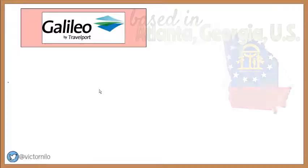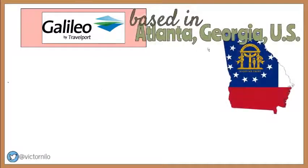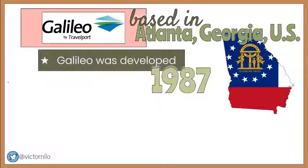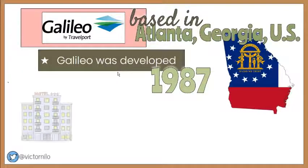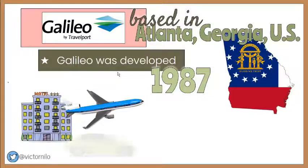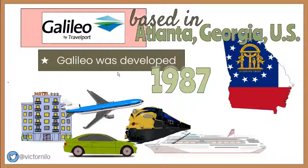Galileo GDS is based in Atlanta, Georgia in the United States. It is owned by Travelport. Galileo can be used to book hotel rooms, airline tickets, train tickets, cruises, and car rentals.